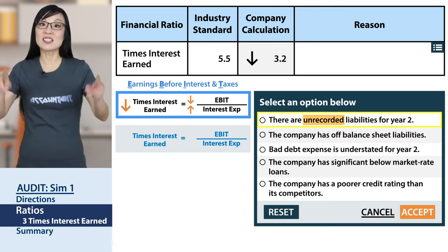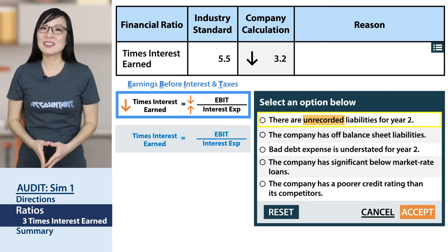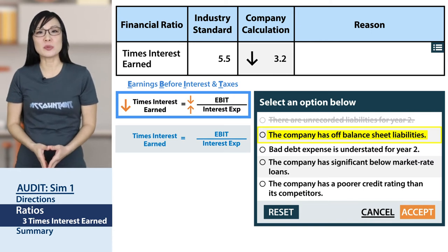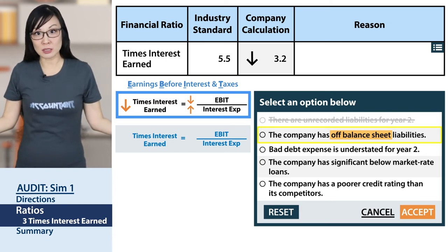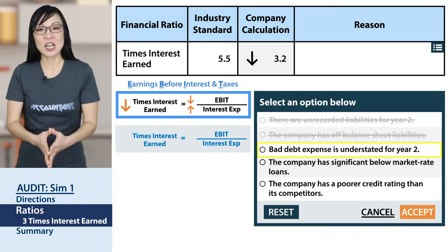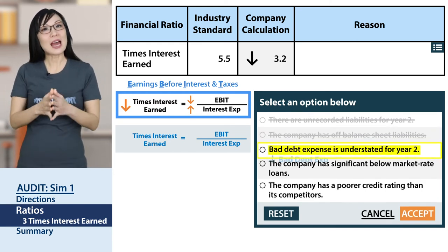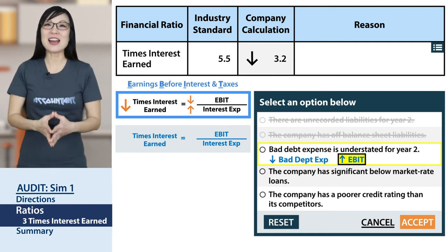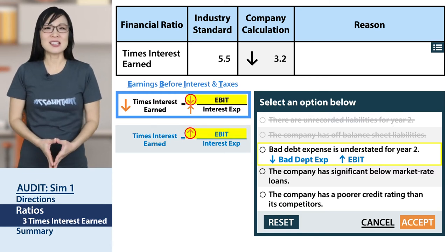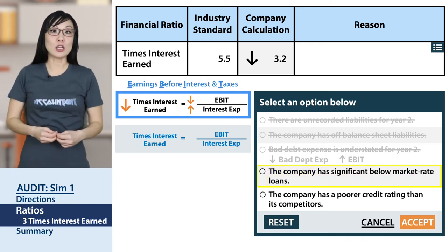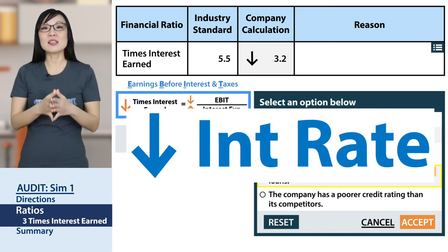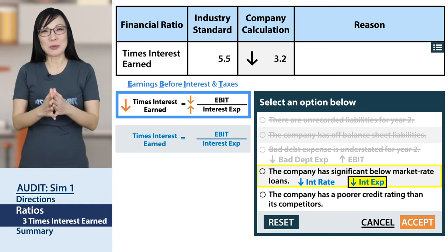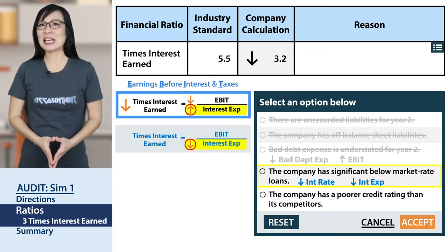Looking at the choices — choice A: there are unrecorded liabilities for year two. Since they're unrecorded and not on the books, they don't affect our ratios. Choice B: the company has off-balance-sheet liabilities — similarly not on the books, so no effect. Choice C: bad debt expense is understated, meaning a smaller expense and a smaller minus, which leads to bigger EBIT — that's not a match. Choice D: the company has significant below-market-rate loans, meaning lower interest expense — also not a match.